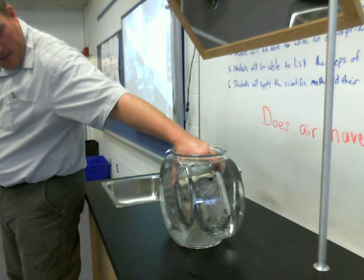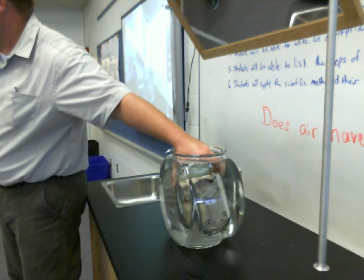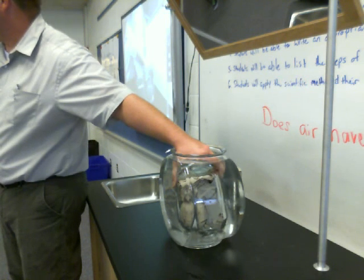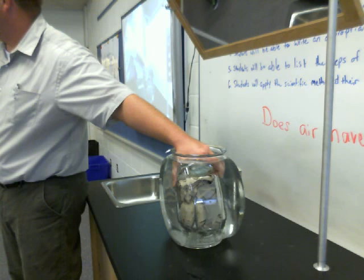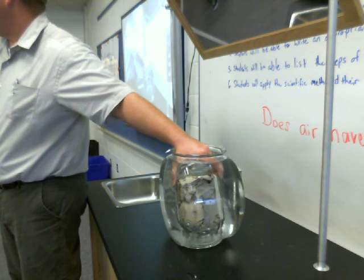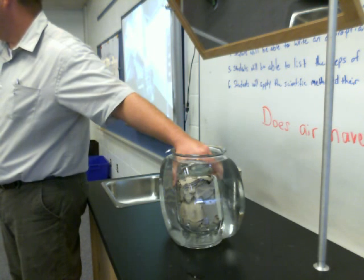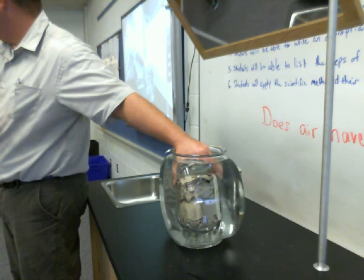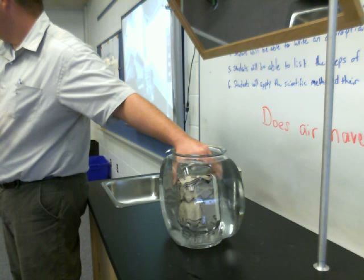If you wrote your hypothesis as 'air has volume,' or if you put the question 'does air have volume?' either way, you can say in the data and conclusions section that based upon this lab, we would still think that air does have volume. Is it possible that there's something else acting here that we're not sure about — some variable that we didn't measure? Yes, that's always possible.